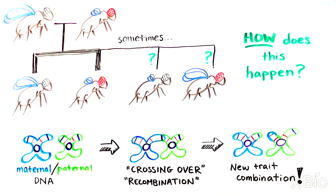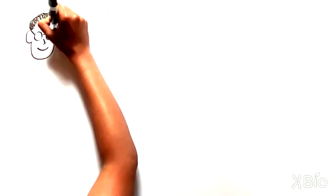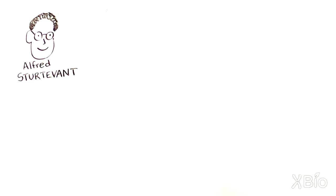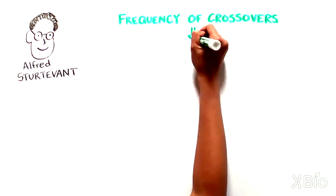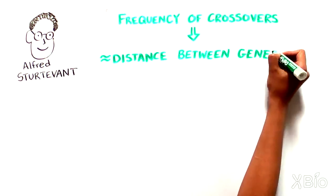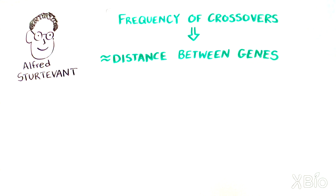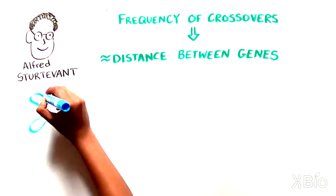So what does this have to do with maps? Morgan's student named Alfred Sturtevant reasoned that the frequency of crossover could be used to infer the approximate distance between genes on a chromosome. And if we know distance between genes, we can make a map. How did he do this?